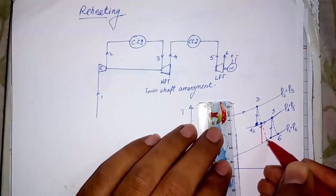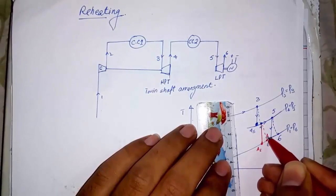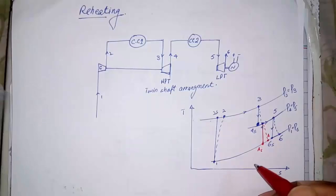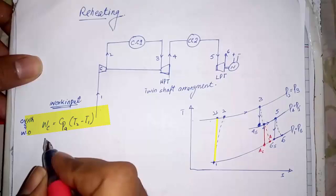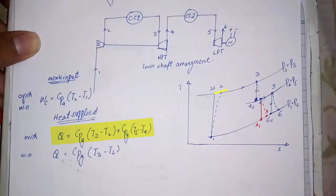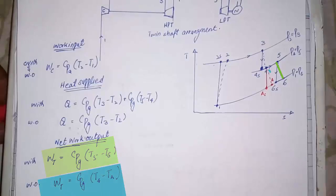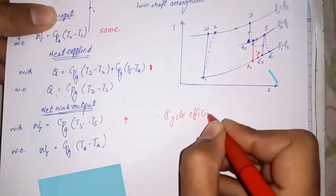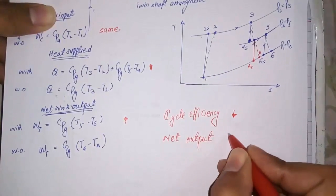If we don't use reheat method, after point 4 the process will be progressed as shown by red line. Let us check the results of this method by writing the formulas for both cases. First is work input, which would be same for both cases. Next is heat supplied, which is greater in case of reheating. Net work output we get greater in case of reheating. So by the usage of reheating method, we will get less cycle efficiency and greater network output.